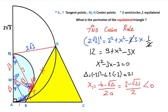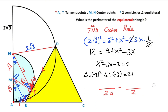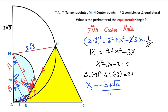Notice that the first root is less than zero, but a length cannot be negative, so we cancel it out. The second root equals (-b plus √delta) over 2a, so the second root equals (3 plus √21) over 2. Therefore x equals (3 plus √21) over 2.